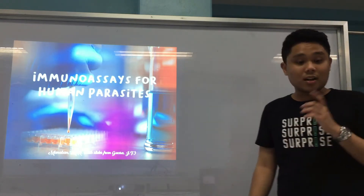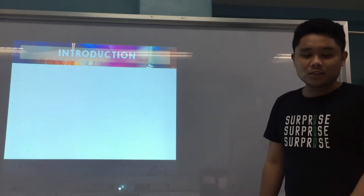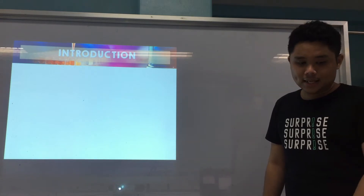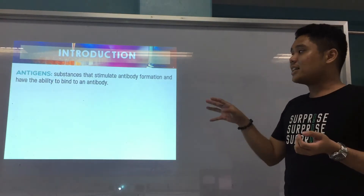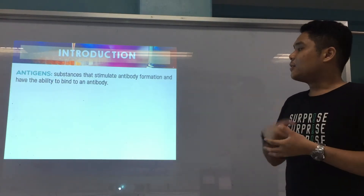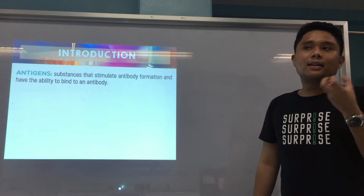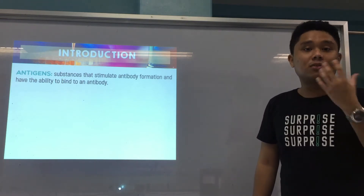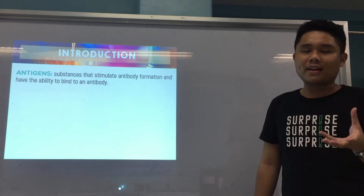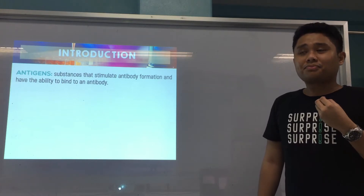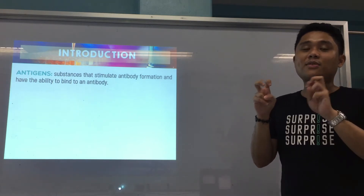These are your immunoassays for human parasites. For a short introduction, your immunoassays are based on the concept of antigens and antibodies. Antigens are substances that stimulate your body for antibody formation and they have the ability to bind on antibodies. Antigens are usually proteins, could be carbohydrates or whatever — substances that can trigger your body to produce an antibody. That's a rough definition for now.